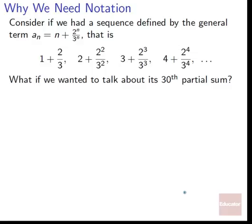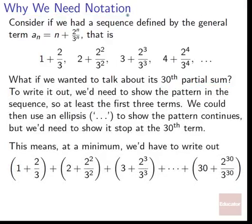Consider a sequence defined by the general term An equals (n plus 2)^n over 3^n. That is: (1 plus 2)/3, (2 plus 2²)/3², (3 plus 2³)/3³, (4 plus 2⁴)/3⁴, and so on. What if we wanted to talk about its 30th partial sum? We'll see very quickly why we need a special form of notation for series — why writing this stuff out by hand is going to be a real pain.